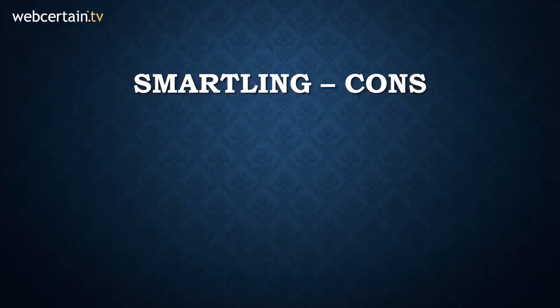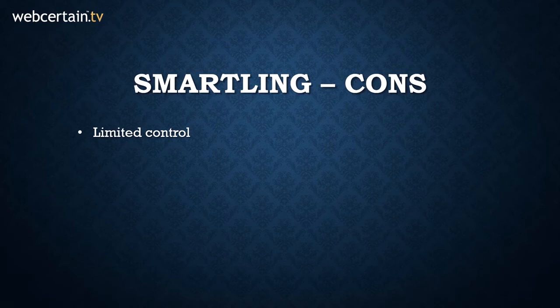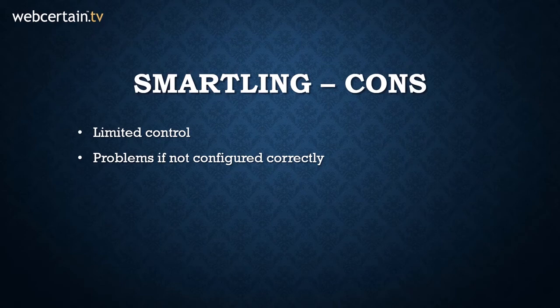Now let's look at Smartling's cons. The integration and setup process is controlled by Smartling, which means that you have limited control. Also, if it is not configured properly in the beginning, it can cause problems — for example, problems identifying which content actually needs to be translated. If it is not configured properly at first, it can be difficult to reconfigure later down the line.